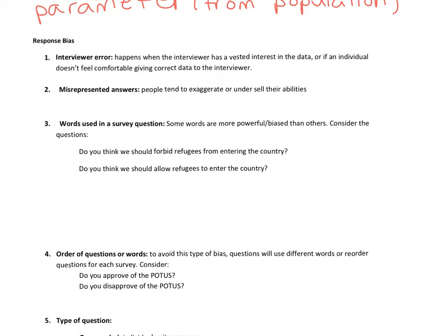So let's see how data can be false. The first type of response bias is interviewer error. This happens when the interviewer has a vested interest in the data, or if the individual doesn't feel comfortable giving correct data — maybe the interviewer is intimidating. For example, if Colgate wants to know what the best toothpaste is and Colgate conducted the survey, they obviously have a vested interest in the results.